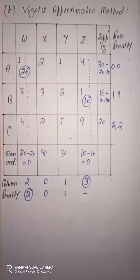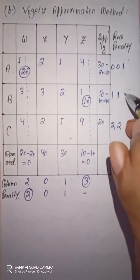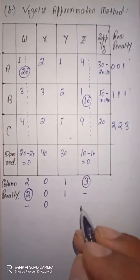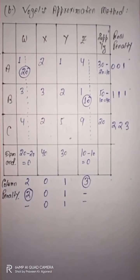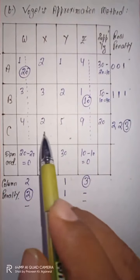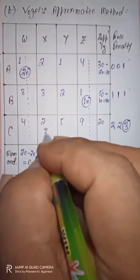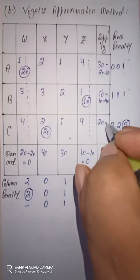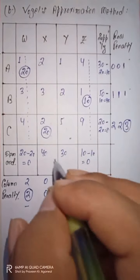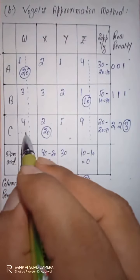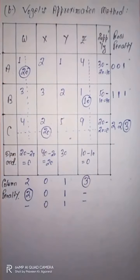Again calculating penalties: row 1 = 1, row 2 = 1, row 3 = 3. Maximum is 3, so row C is selected. Minimum cost in row C is 2. Supply is 20 and demand is 40, so allocation is 20. 20 minus 20 equals 0 and 40 minus 20 equals 20. Row C is exhausted and eliminated.